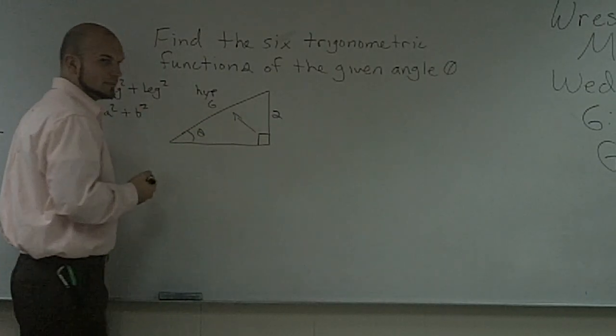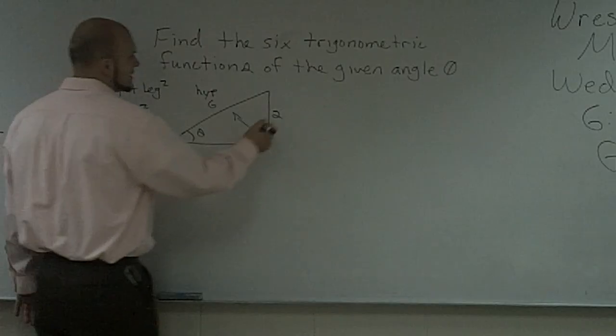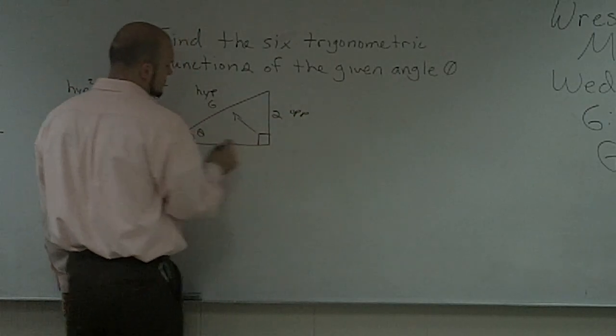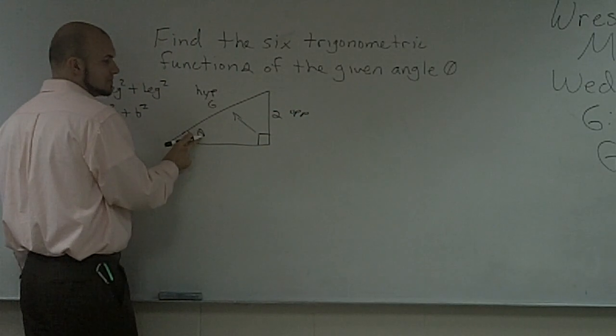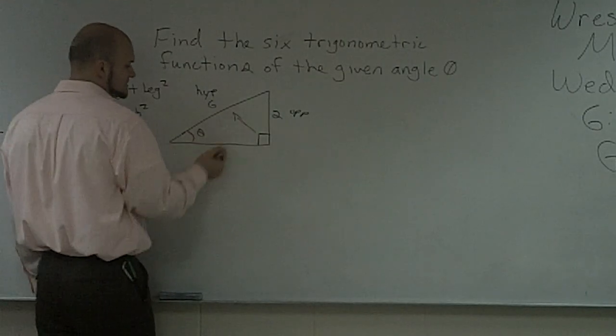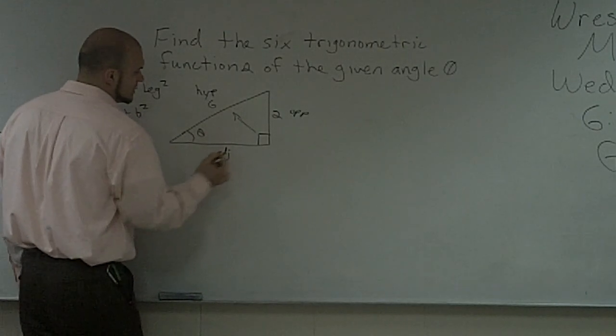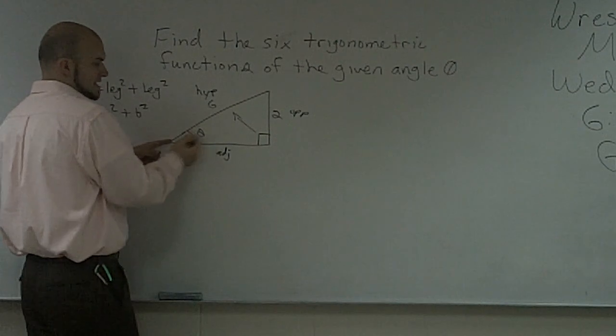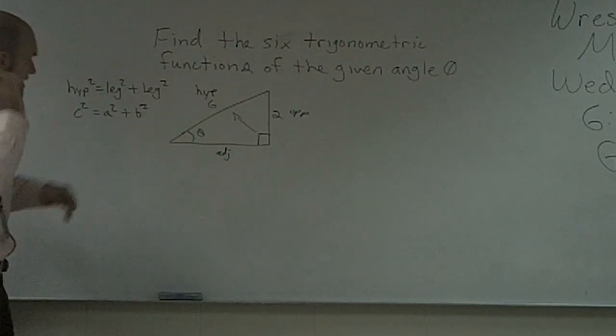Then our two legs are going to make up our adjacent and our opposite. We know that the side opposite or farthest away from our angle, which is theta, is going to be the opposite and the one closest, and what also helps make up the angle theta, is going to be your adjacent.